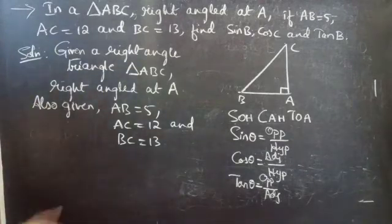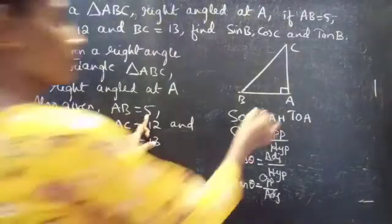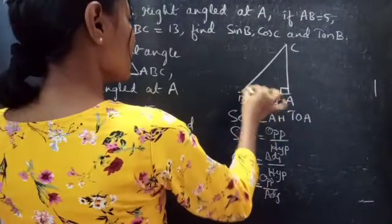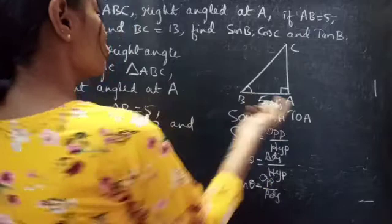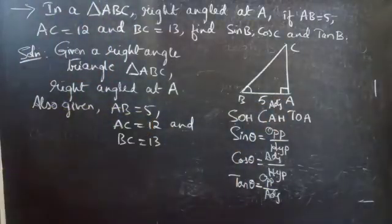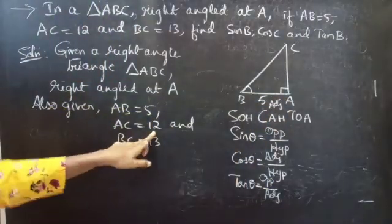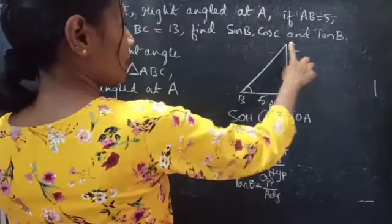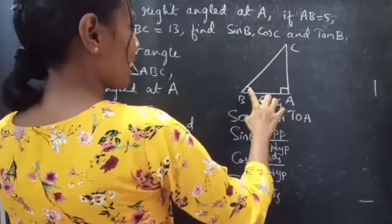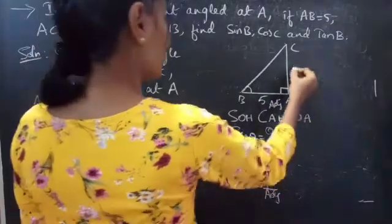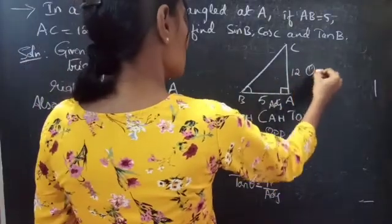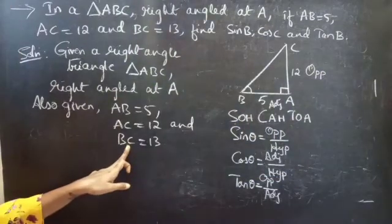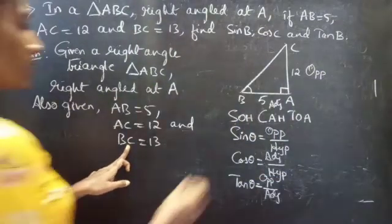We are given AB equals 5 — this is our adjacent side when we consider with reference to angle B. AC equals 12 — the side which is opposite to angle B is our opposite side. Next, BC equals 13.